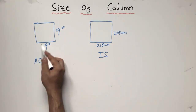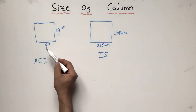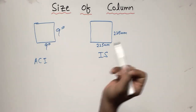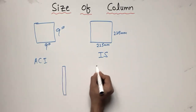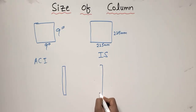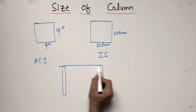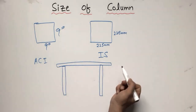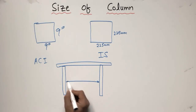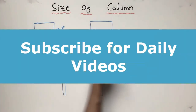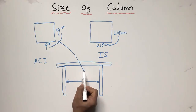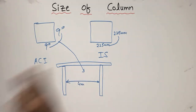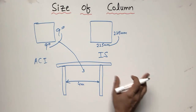Now, if this is your minimum dimension, what should be the maximum spacing between two RCC columns? With one RCC column here and another RCC column there, and a beam or slab on top, the distance between two RCC columns should be 4 meters. It should not be greater than 4 meters.